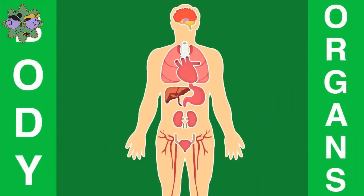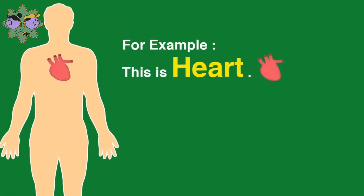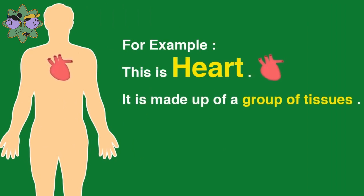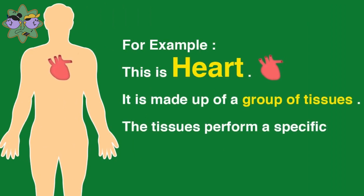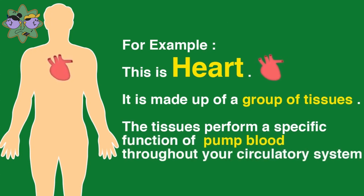The human body organ. An organ is a group of tissue that performs a specific function. For example, this is a heart. It is made of a group of tissue. The tissue performs a specific function of pumping blood through your circulatory system.